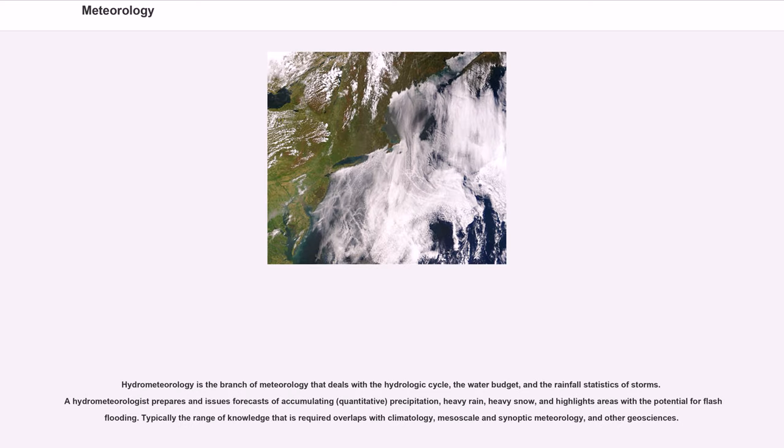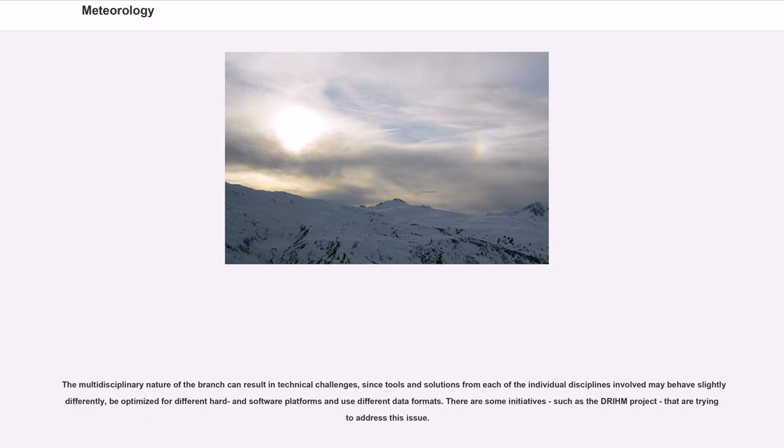Hydro-meteorology is the branch of meteorology that deals with the hydrologic cycle, the water budget, and the rainfall statistics of storms. A hydrometeorologist prepares and issues forecasts of accumulating, quantitative precipitation, heavy rain, heavy snow, and highlights areas with the potential for flash flooding. Typically the range of knowledge that is required overlaps with climatology, mesoscale and synoptic meteorology, and other geosciences. The multidisciplinary nature of the branch can result in technical challenges, since tools and solutions from each of the individual disciplines involved may behave slightly differently.